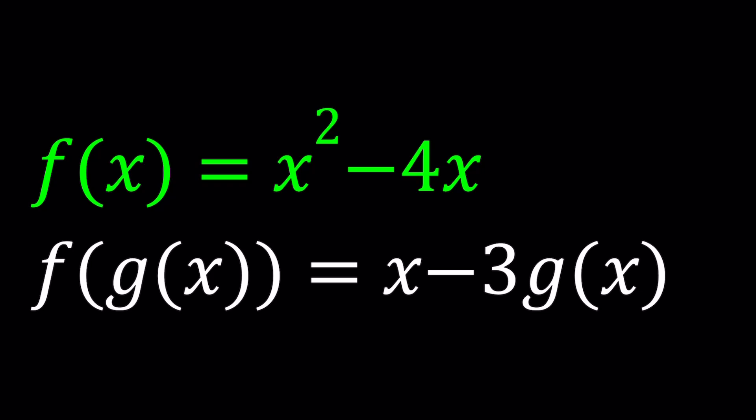So we know that f of x is equal to x squared minus 4x. How could we use that definition to work with the second equation? When you are composing two functions, f of g basically means that you need to take g of x, whatever that is, and replace the x in f of x with that.